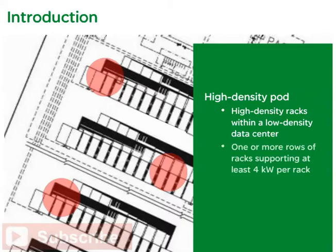In this course, a high-density pod is defined as one or more rows of racks that support a per-rack density average of 4 kilowatts or above. A high-density pod resides within the borders of a larger, low-density data center. The high-density pod is not the same as a high-density data center, which is a data center dedicated to supporting nothing but high-density racks.